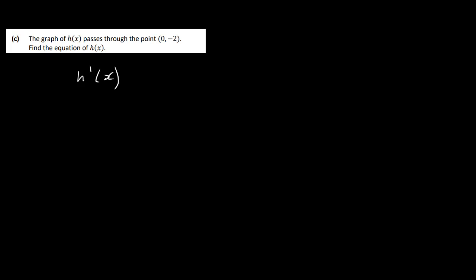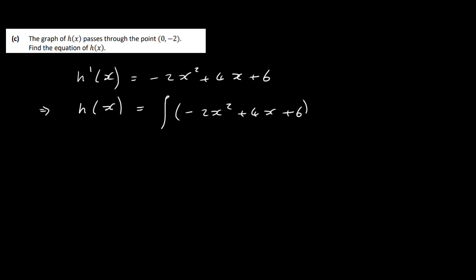That's part b. Let's have a look at part c. The graph of h of x passes through the point (0, minus 2). Find the equation of h of x. We have our slope function h prime x equals minus 2x squared plus 4x plus 6, and we need to work backwards to find h of x by integrating. So h of x is the integral of minus 2x squared plus 4x plus 6 with respect to x. Since this is an indefinite integral, we get a constant of integration c, and we use the extra information given to find c.